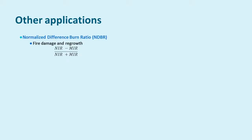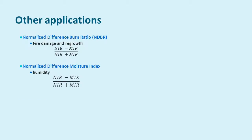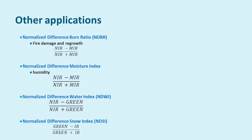There are a variety of other indexes that have been devised for different remote sensing applications. For example, another common one is the Normalized Difference Burn Ratio, which allows us to look at fire damage and regrowth using the near-infrared and mid-infrared bands. Similarly, the Normalized Difference Moisture Index is good for looking at humidity, also using near-infrared and mid-infrared. There is also the Normalized Difference Water Index, which uses near-infrared and green, and the Normalized Difference Snow Index, which uses green and infrared.